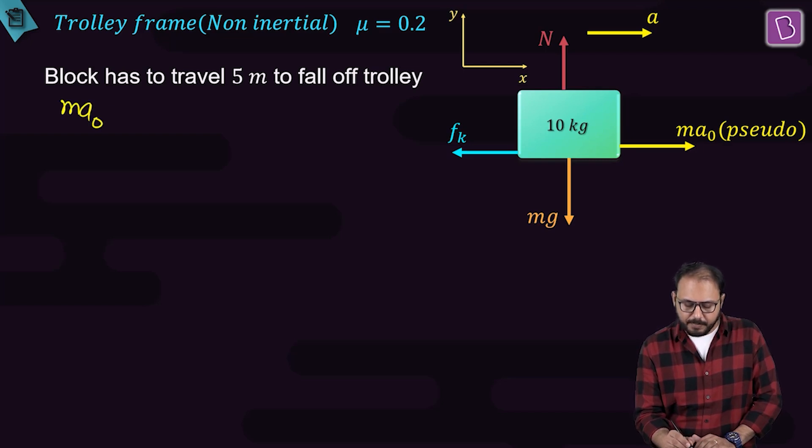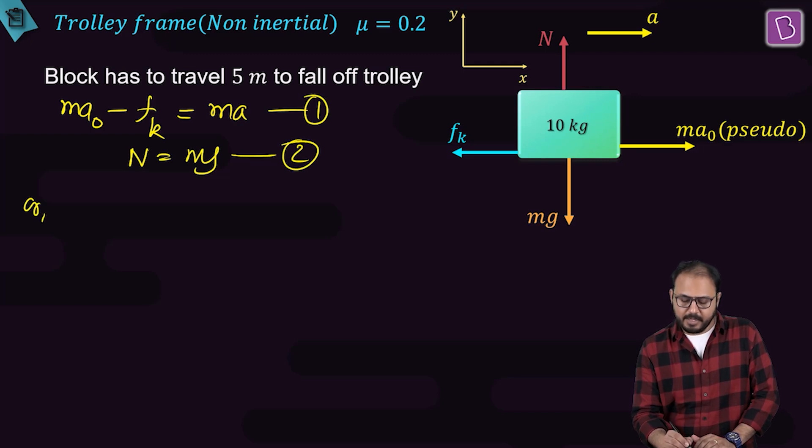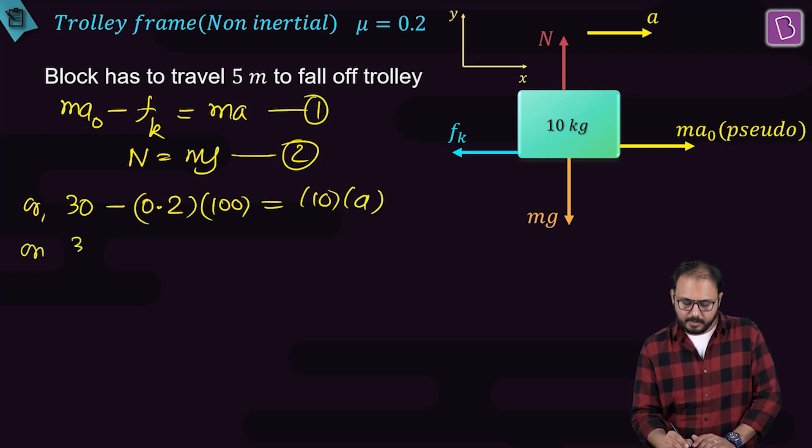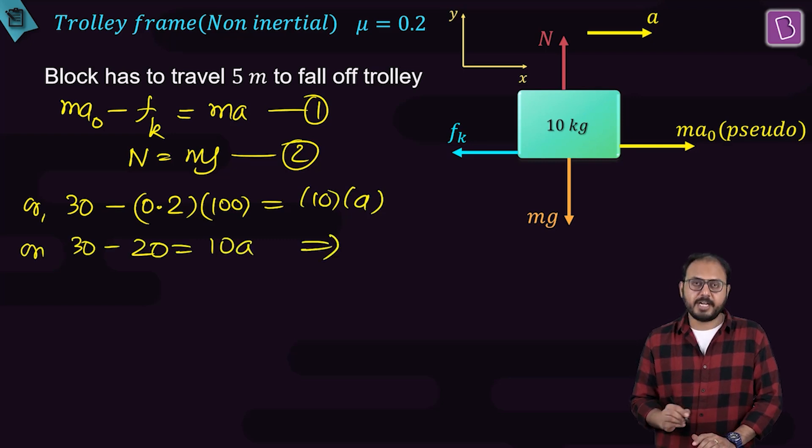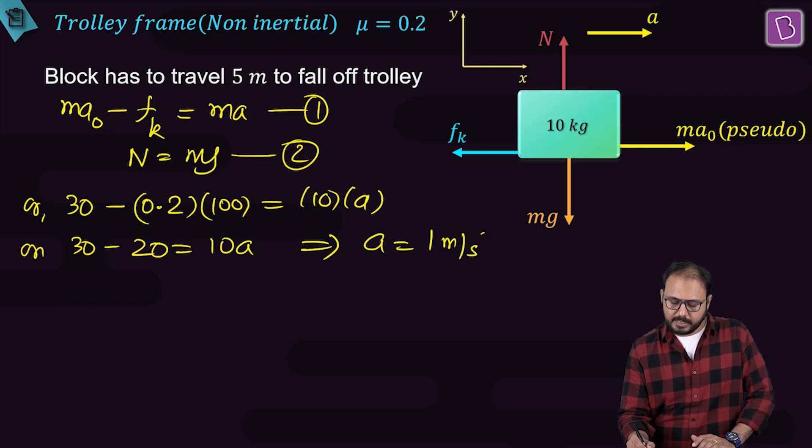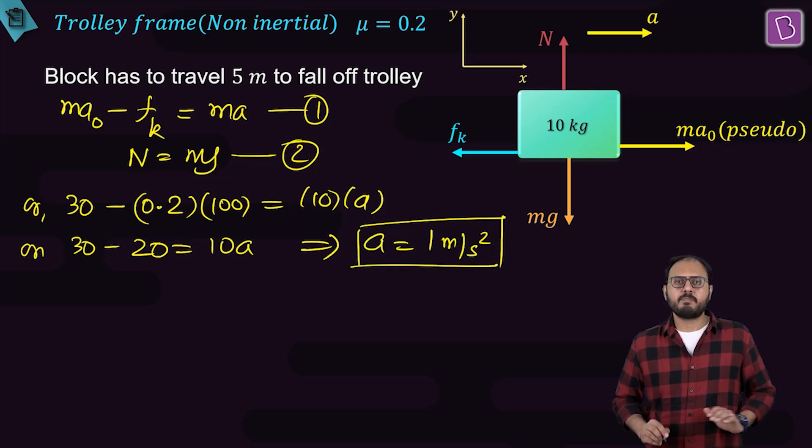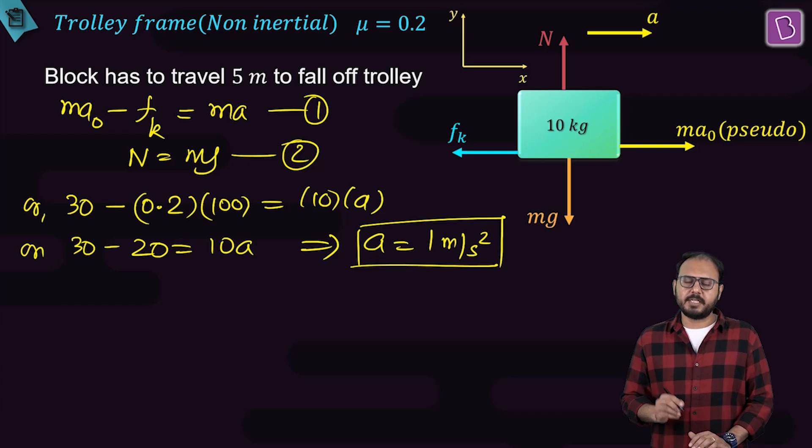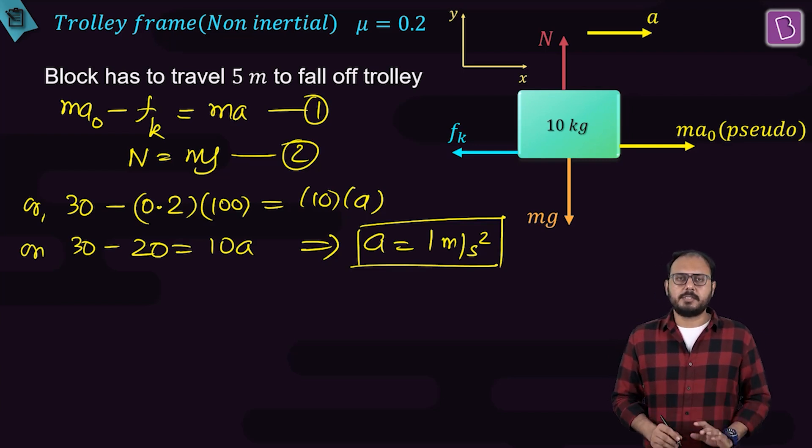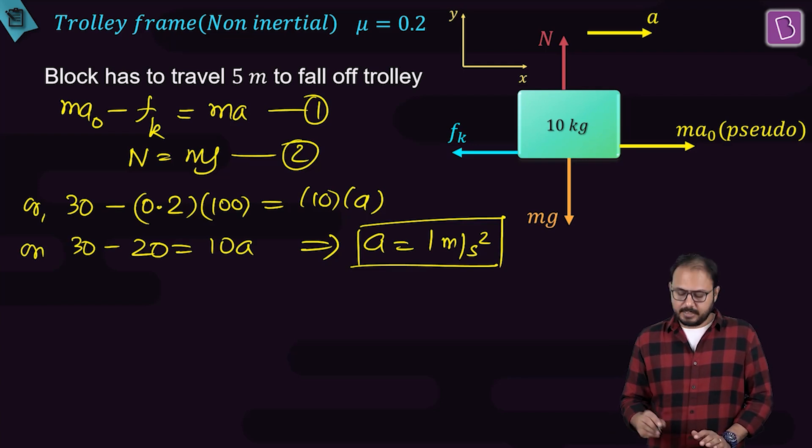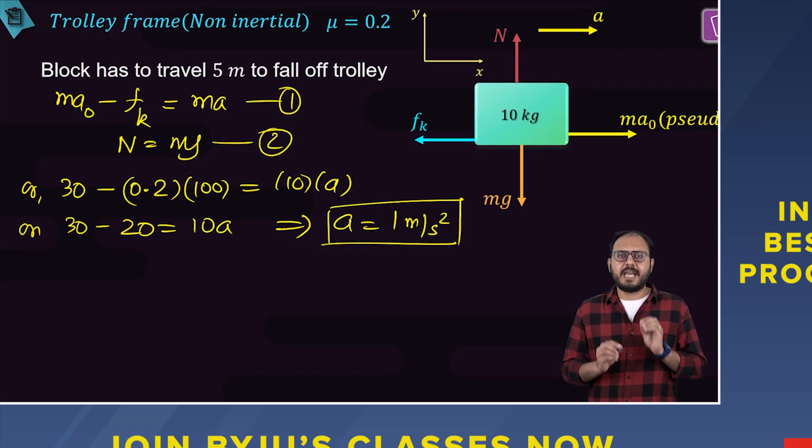I find the value of A by Ma0 minus Fk is equal to Ma. And N is equal to Mg. Let's put the values. Ma0 is 10 times 3, 30. Fk is 0.2 times Mg, 100 is equal to 10 A. 30 minus 20 is equal to 10 A, and A is 1 meter per second square. Is this acceleration constant? Oh yes, absolutely it's constant. If it's constant, am I eligible to apply the equation of motion x equal to ut plus half A t square?